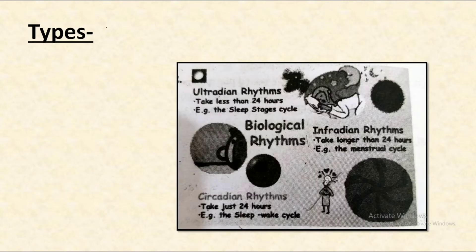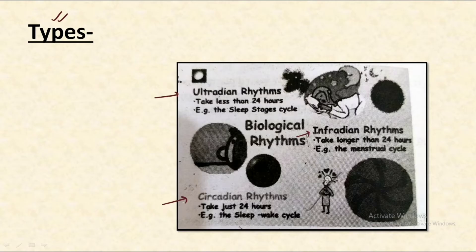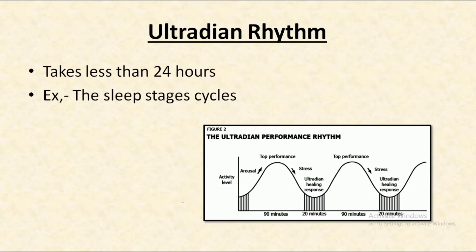So let us understand about the types of biological clocks. We have majorly three main types: the first one is ultradian, then we have infradian, and finally we have circadian rhythms. Let us understand about each one of them in detail.